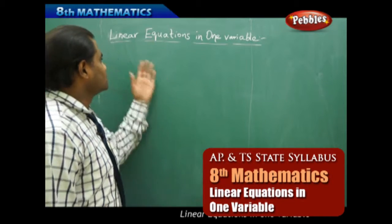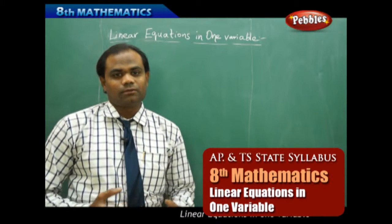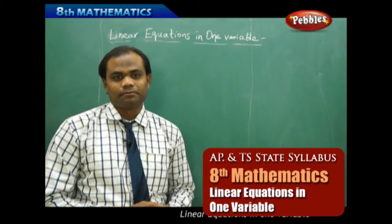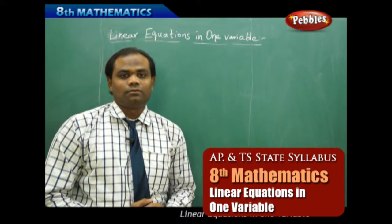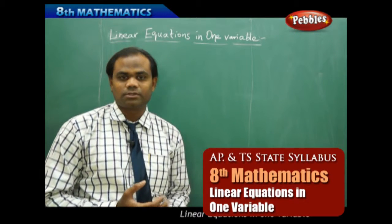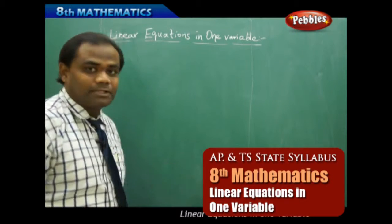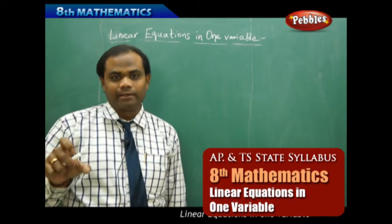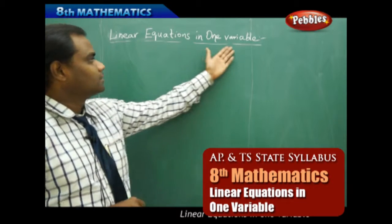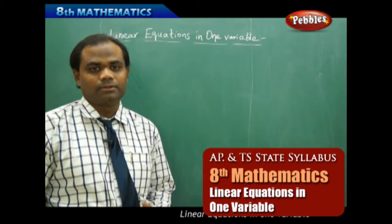This topic is about linear equations in one variable. Before we discuss linear equations in one variable, let's revisit algebraic expressions. An algebraic expression can be expressed in various forms: one term is called a monomial, two terms a binomial, and three terms a trinomial. Similarly, algebraic expressions are defined through their degree or the power of x, and those expressions define linear equations or other equations in one or two variables.